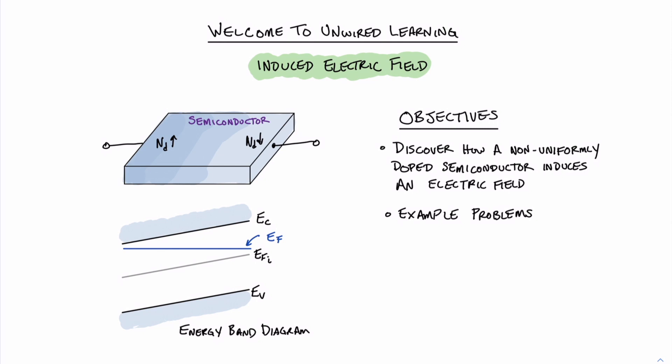What's really cool is that we can represent this tilted band diagram and we can show how there is an electric field in this direction. The question we'll be answering is: what is the equation that represents the electric field?